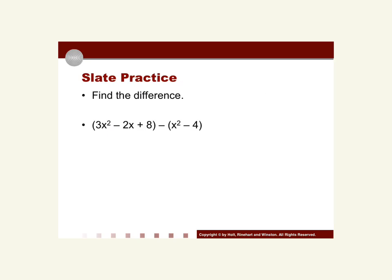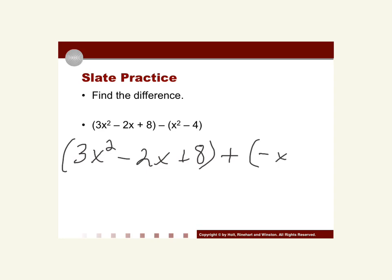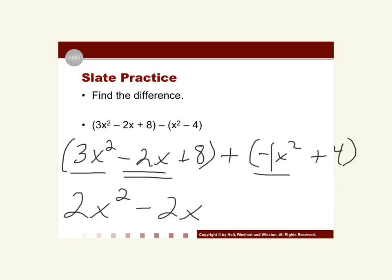Here we're going to do a subtraction problem. We're going to change the subtraction to addition by adding the opposite. We keep 3x² - 2x + 8, change the minus to a plus, and take the opposite — making it + (-x²) + 4. Now combining like terms: I'll underline like terms. 3x² + (-1x²) = 2x². There are no other x terms, so that stays -2x. Then 8 + 4 = +12. The answer is 2x² - 2x + 12, written in standard form — starting with the highest degree term.